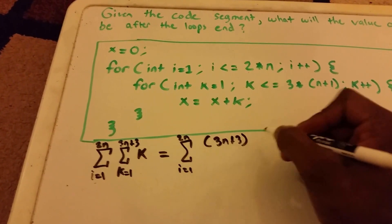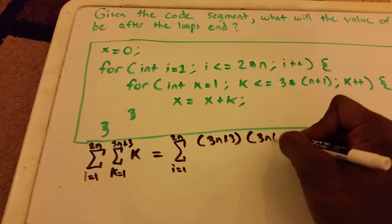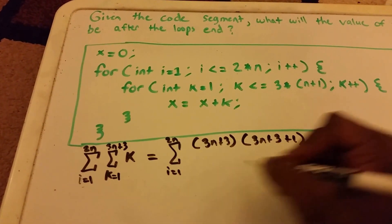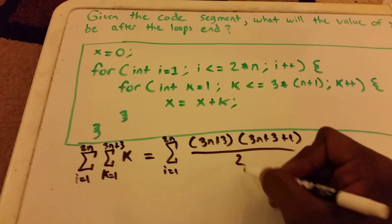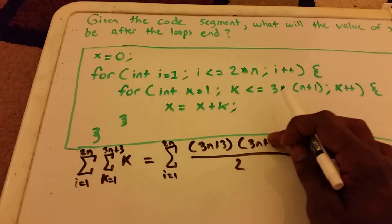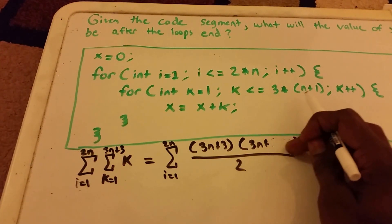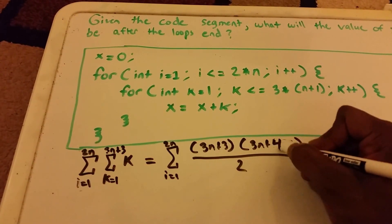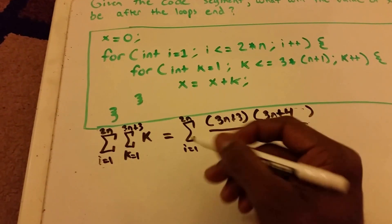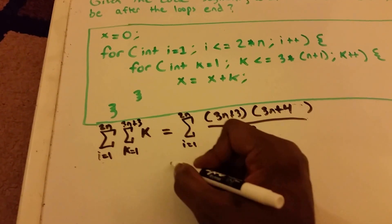Times three n plus three plus one all over two. And so three n plus three plus one is equal to three n plus four. Okay, so now we need to solve for this two n here, I mean the summation from i equals one to two n.